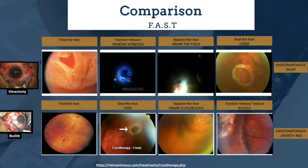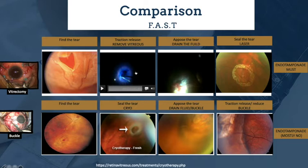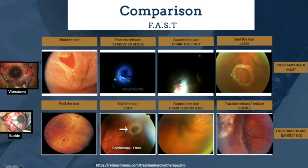Comparing vitrectomy and buckle: both surgeries achieve the same treatment objective but in a different sequence and to a different extent. For vitrectomy, we find the tear preoperatively or intraoperatively, remove the vitreous by inducing posterior vitreous detachment, drain the fluid internally to appose the tear, and finally seal the tear with either laser or cryo. Since laser and cryo do not attain immediate adhesion, all vitrectomy cases require an endotamponade.